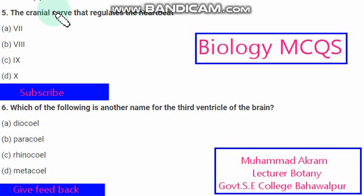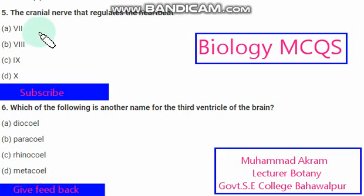The cranial nerve that regulates the heartbeat — the right option is option D.